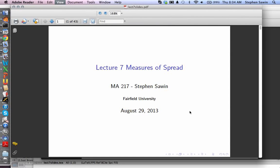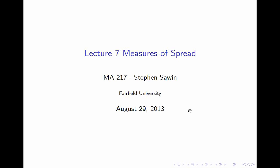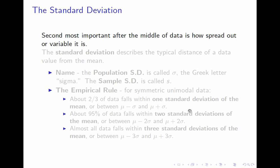This is Lecture 7, Measures of Spread. Last time we talked about measures of central tendency — parameters and statistics for a numerical variable which told you where the middle or typical value was. That's the most important thing to say about a numerical variable. But the second most important thing to say is how spread out the values are around that middle. Before we talked about the mean and the median; today I'm going to focus on the mean and ask how spread out the data is around the mean.